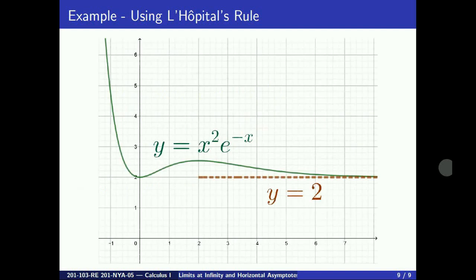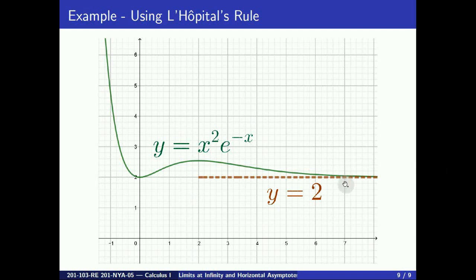Our analysis is confirmed in this figure by the graph of the function. When x goes to infinity, the function has a horizontal asymptote y equals 2, and it rises to infinity when x goes to minus infinity.